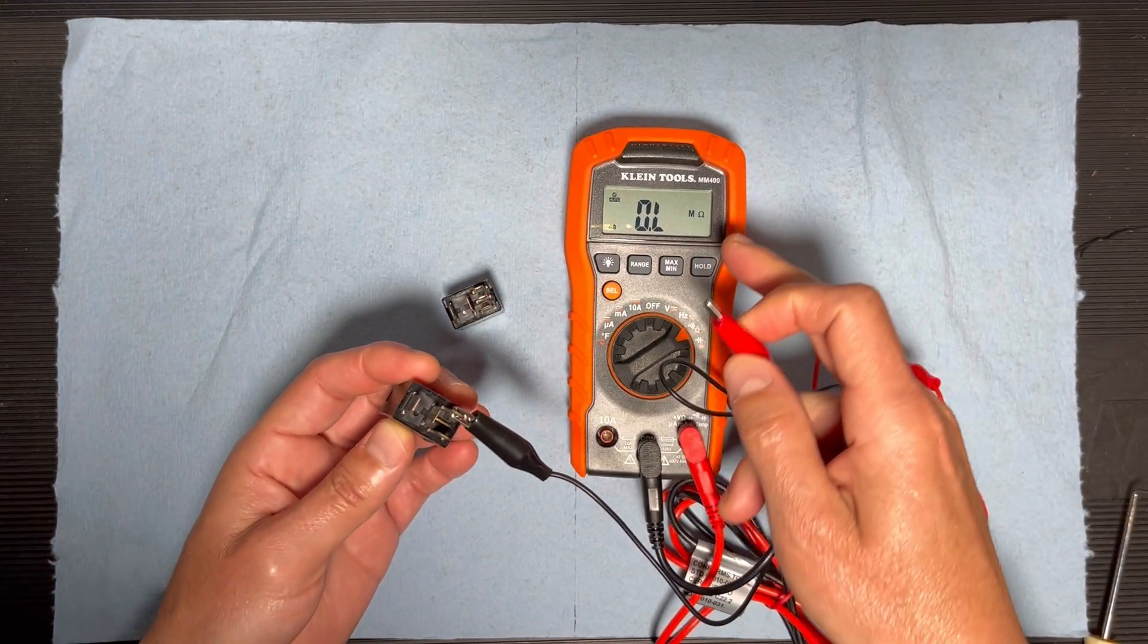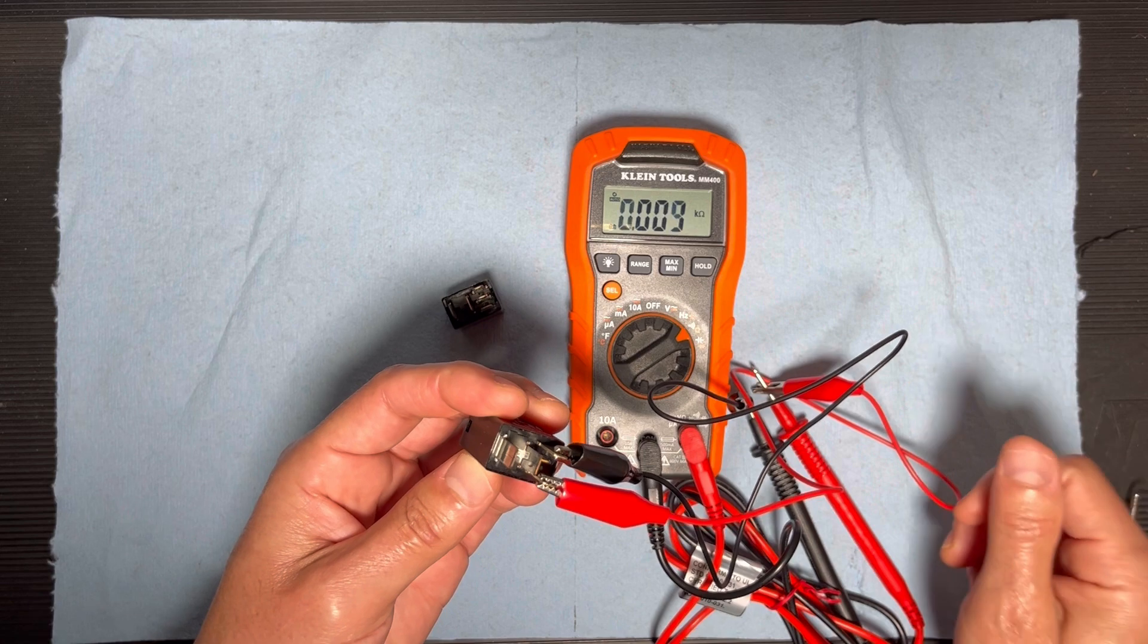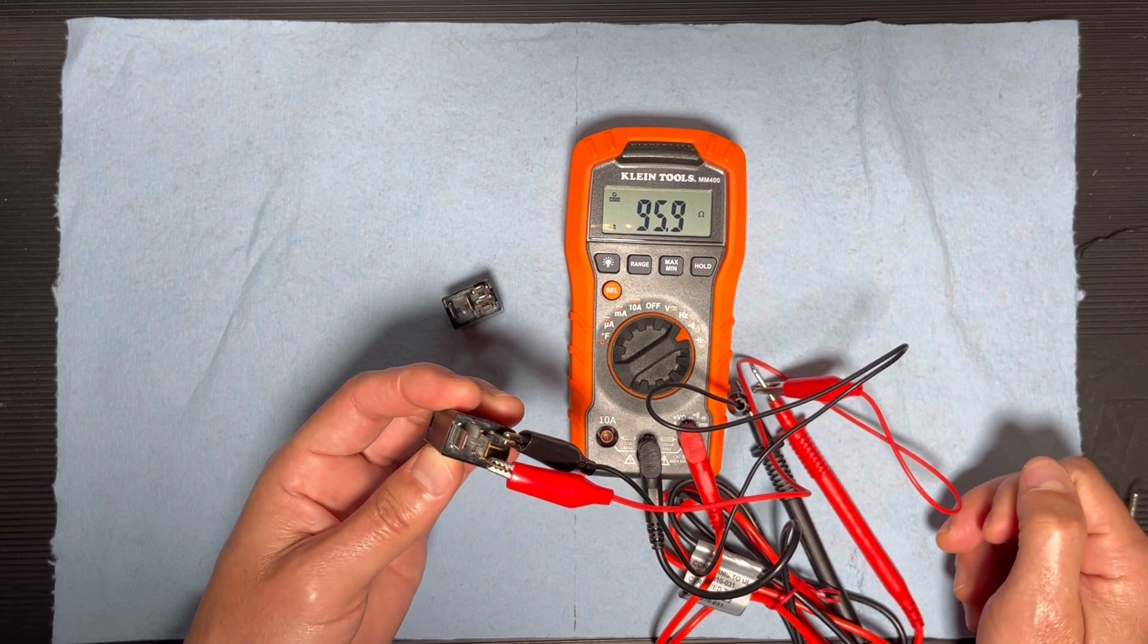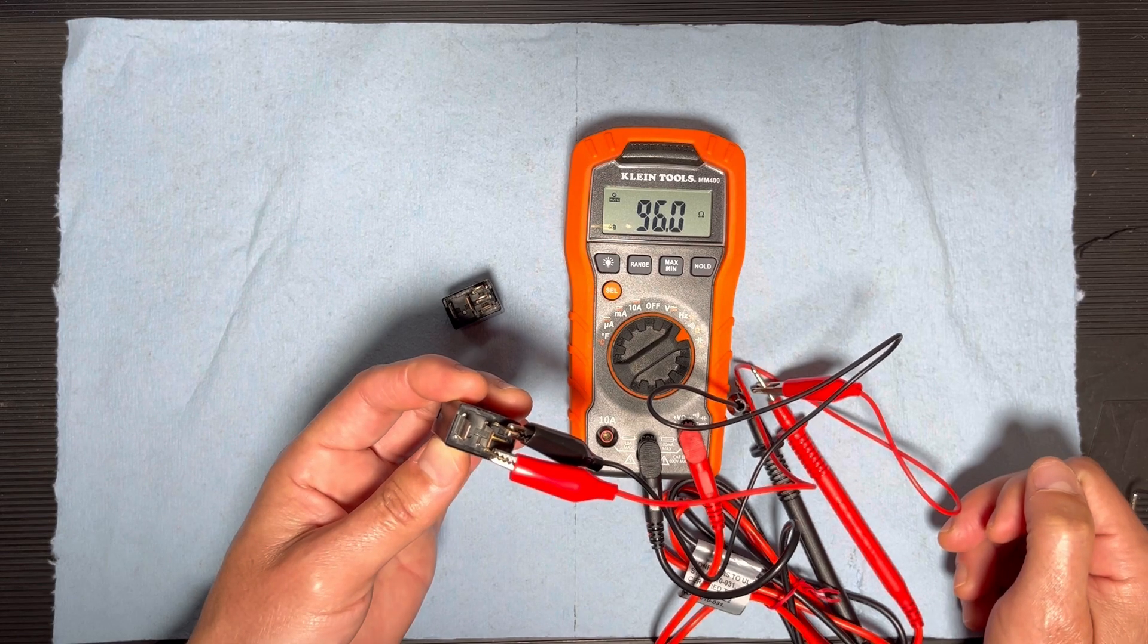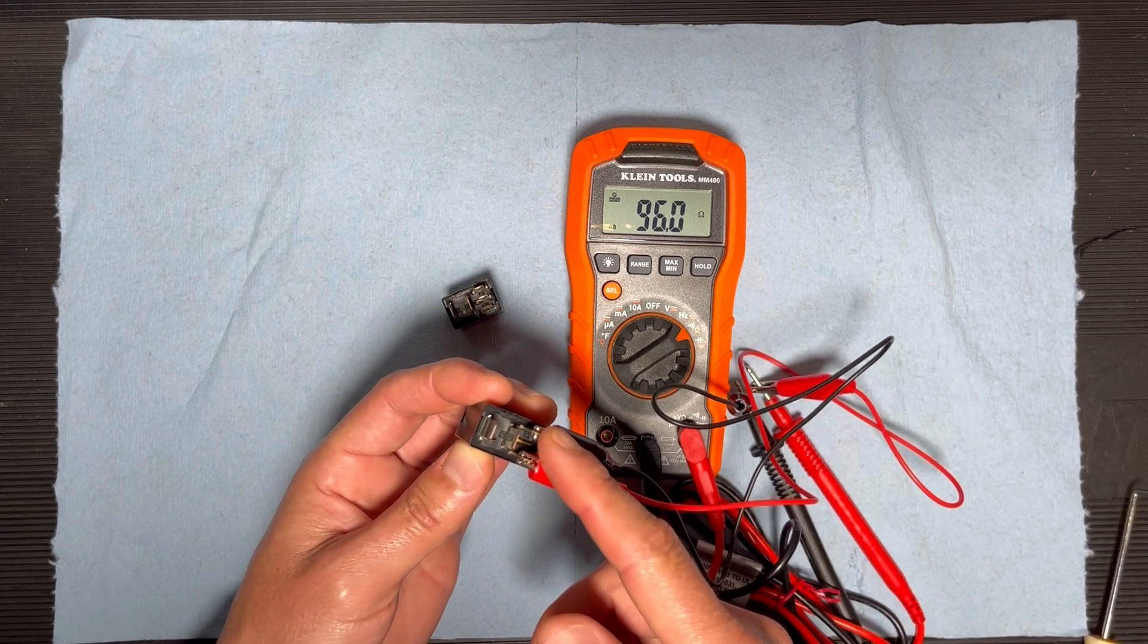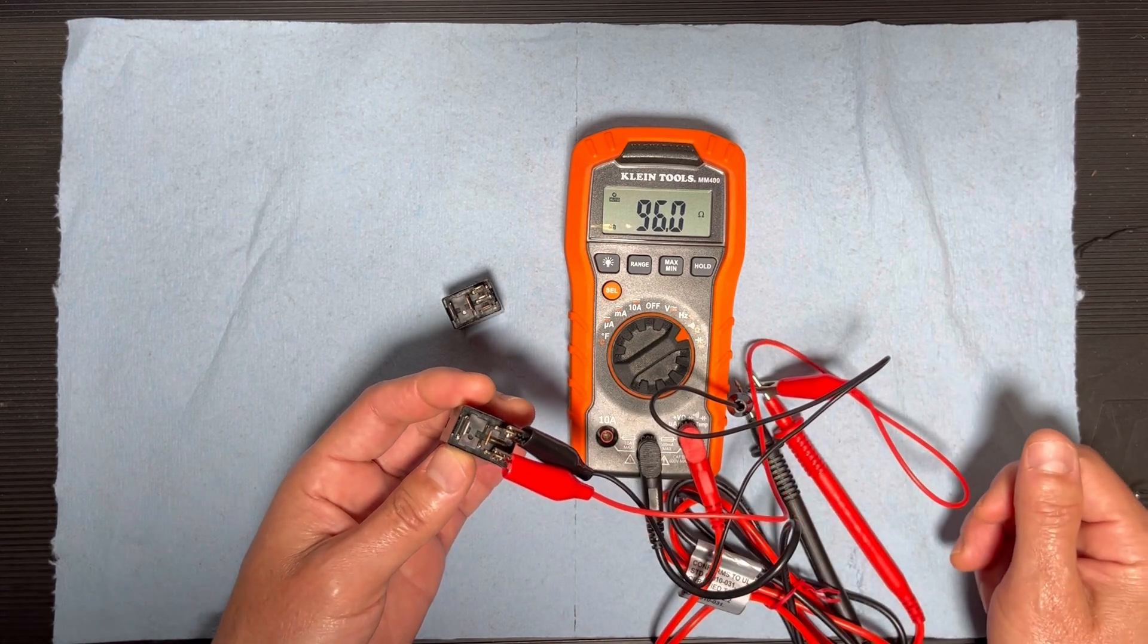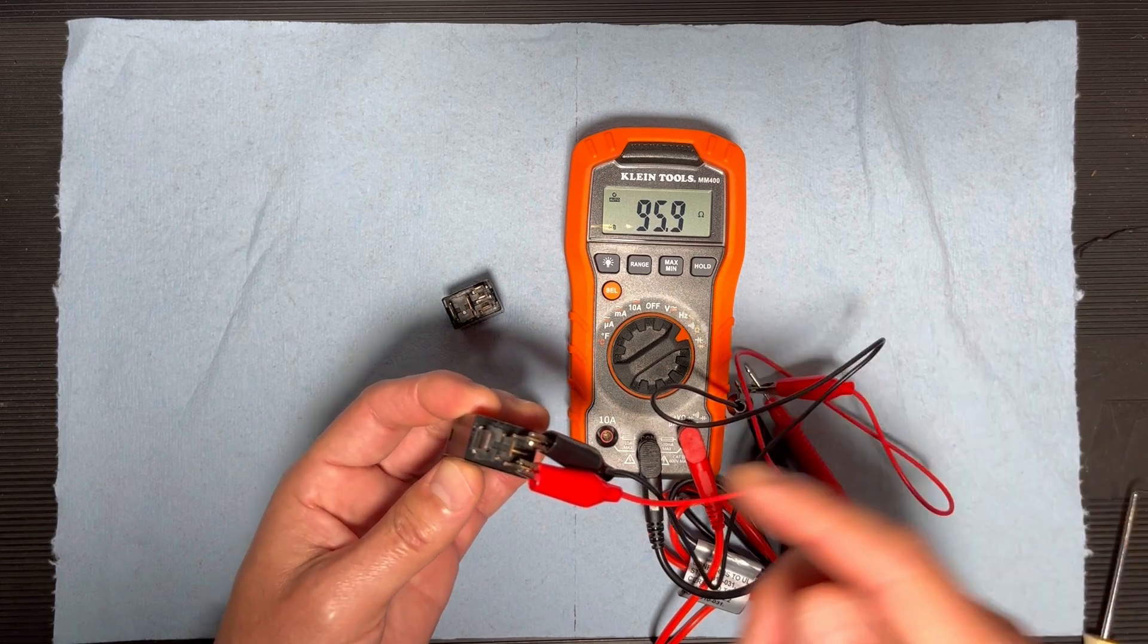Pay attention here, it's going to show some numbers. The range has to be between 50 and 200. If it's between that range the relay is good. If it's out of the range, that means this relay is bad.